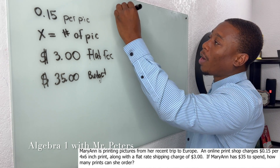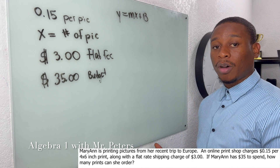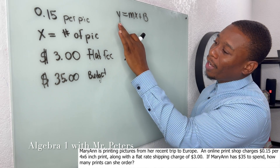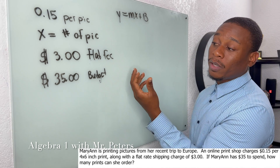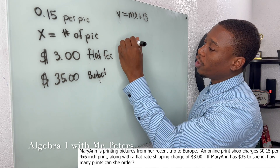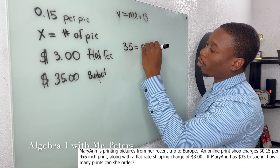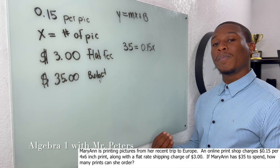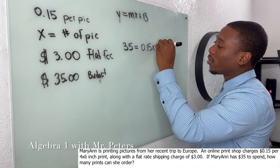Now that we have all the important information, we use the formula y = mx + b. What we're trying to solve for is x, the number of pictures. Remember that y is the dependent variable — based on a certain number of pictures, we have to spend a certain amount of money. The amount of money we have is a $35 budget, so 35 equals the cost per picture times the number of pictures.